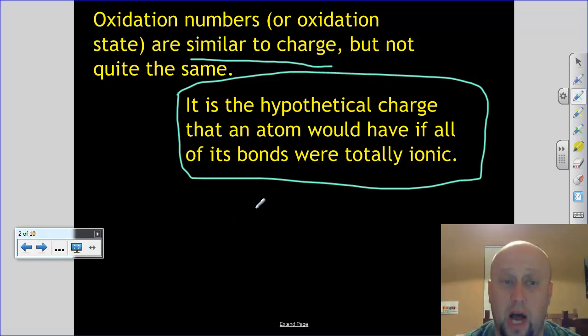Now, most bonds are not totally ionic. They're at least partially covalent in a lot of cases. But if they were, the oxidation number is what would result. Now, we need them a lot in science. They tell us a lot about where the electrons reside. They have a lot to do with electronegativity. And so they tell us what gets the electrons and what doesn't. So they're pretty important for us.